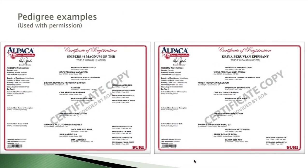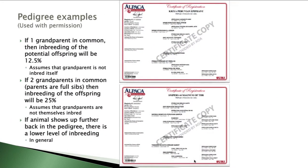We're going to work off the two pedigrees used in the previous presentation: Snipers 44 Magnum of THR and Crea Peruvian Epiphany. I took their two pedigrees and lined them up. These are the pedigrees of the two animals that would become parents of the next generation if you mated these two.